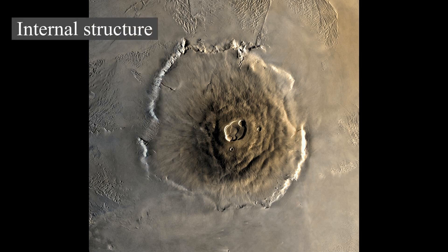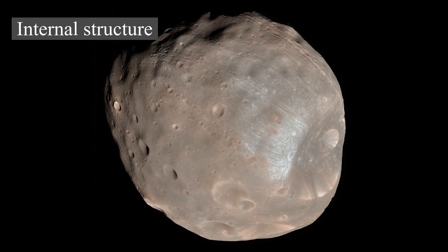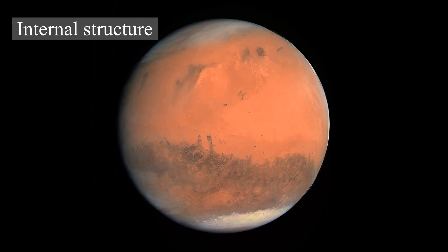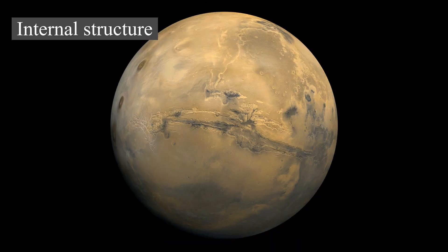Like Earth, Mars has differentiated into a dense metallic core overlaid by less dense materials. Current models imply a core consisting primarily of iron and nickel with about 16–17 percent sulfur. This iron sulfide core is thought to be twice as rich in lighter elements as Earth's. The core is surrounded by a silicate mantle that formed many of the tectonic and volcanic features on the planet but appears to be dormant. Besides silicon and oxygen, the most abundant elements in the Martian crust are iron, magnesium, aluminium, calcium, and potassium.